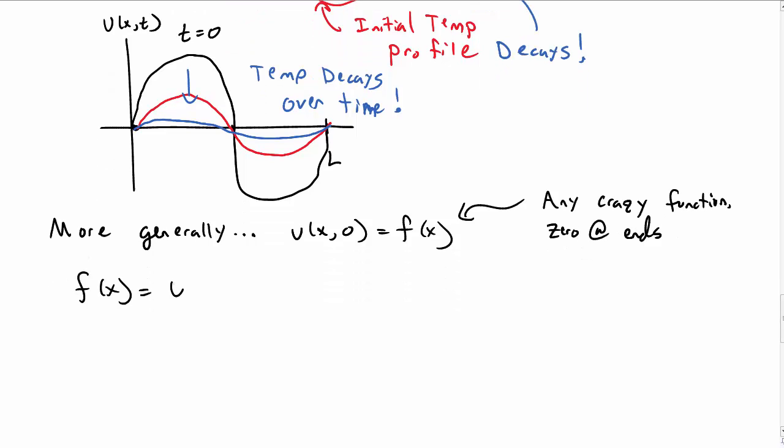That tells us that that function is now equal to, well, the temperature at t equal to 0, which is the sum over b sub n sine of n pi x over L. And so we need to now solve this. Well, that's kind of nice. That's actually a Fourier series.